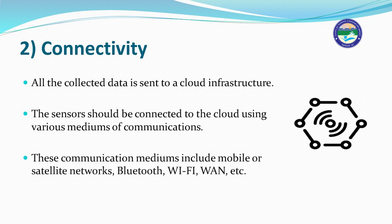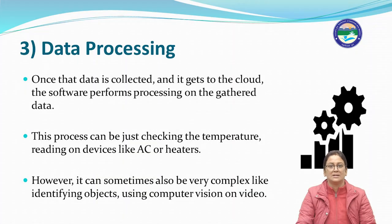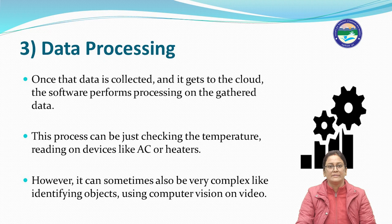The sensors are interconnected to the cloud using various mediums of communication — these can be Bluetooth, Wi-Fi, WAN, satellite networks, or mobile networks. Third is data processing: once data is collected and reaches the cloud, software performs processing on it. This can be as simple as checking a temperature reading on a device like an AC or heater, or as complex as identifying objects using computer vision on video. Relevant data must be extracted whether in simplest or very complex form.